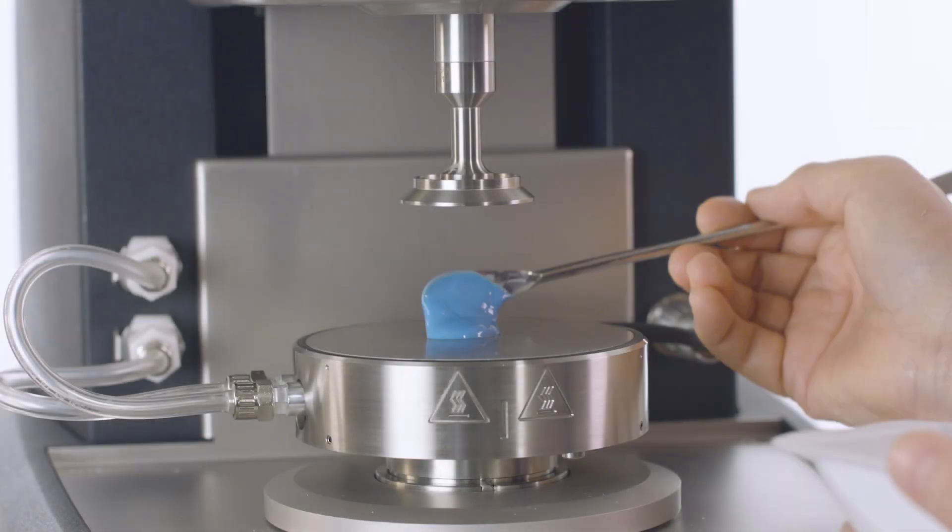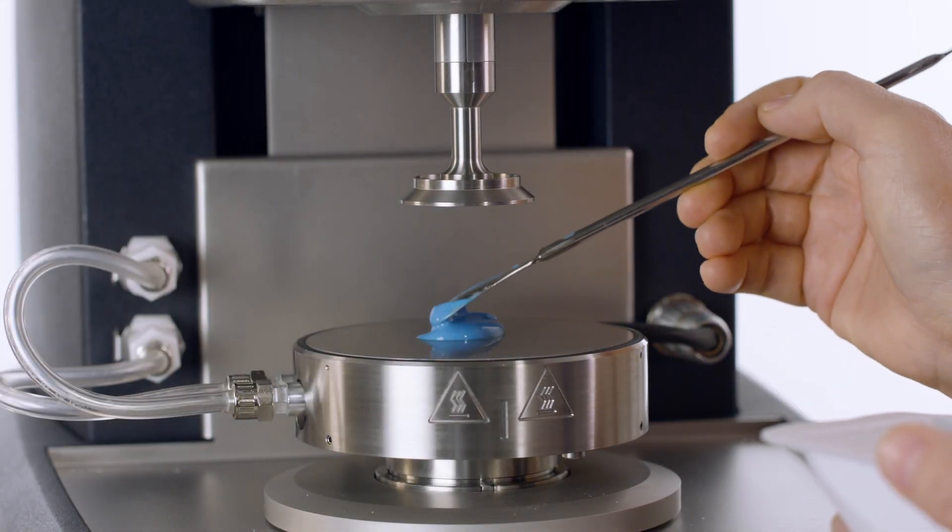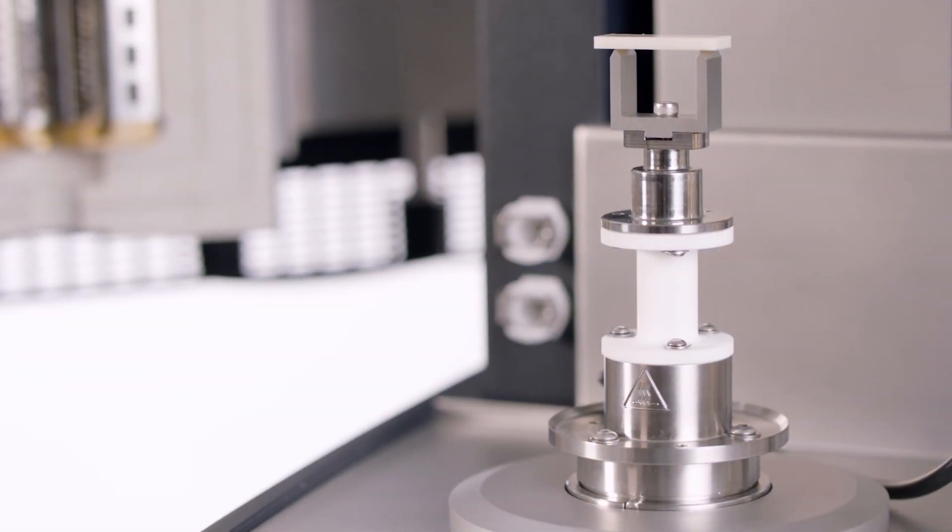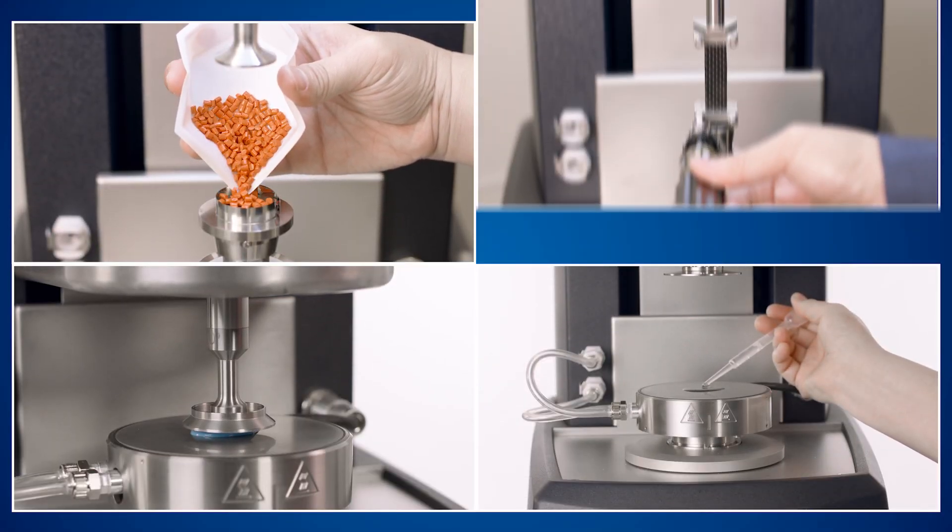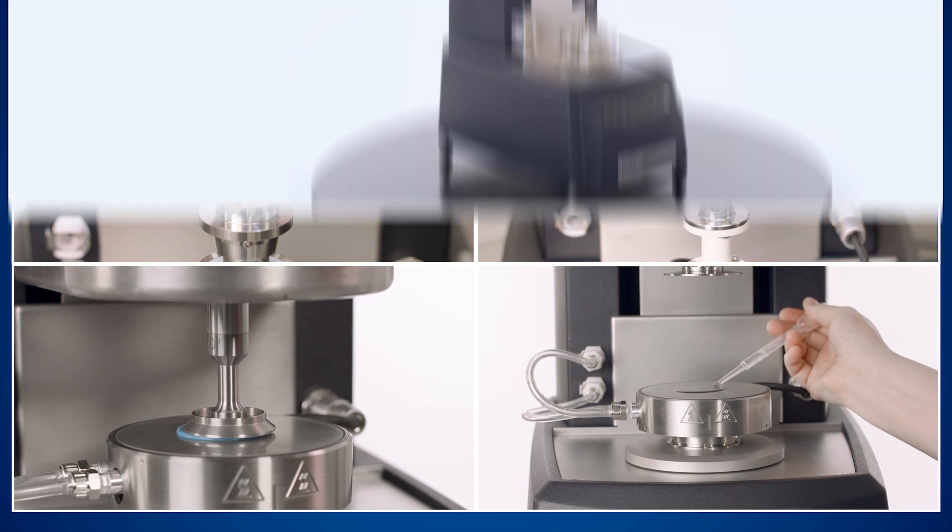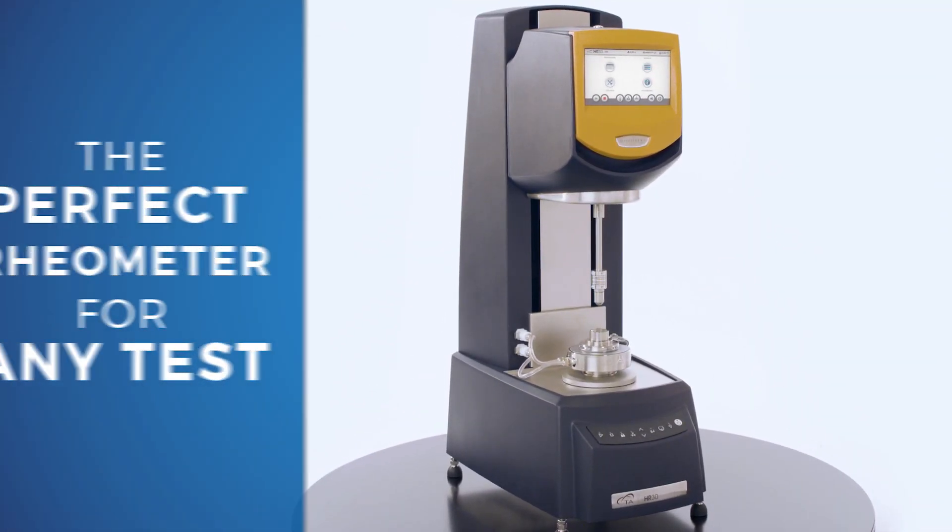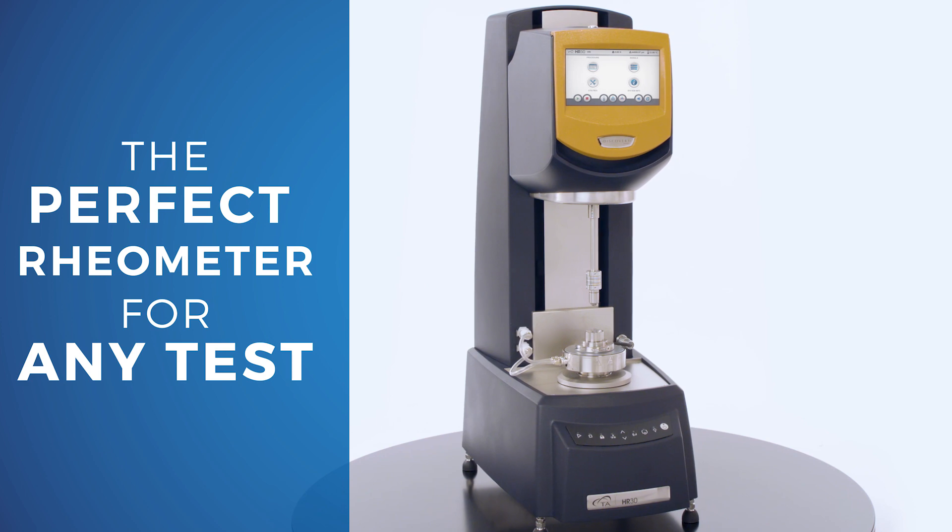TA's rheometers are sensitive enough to measure the softest materials and rugged enough to handle the stiffest samples – from proteins to polymers, creams to composites, and everything in between. The Discovery Hybrid Rheometer is the perfect rheometer for any test.